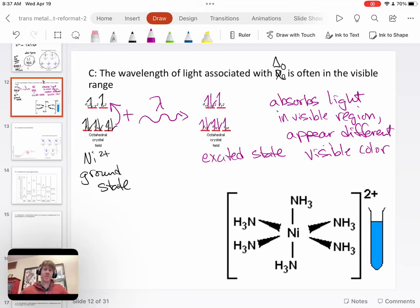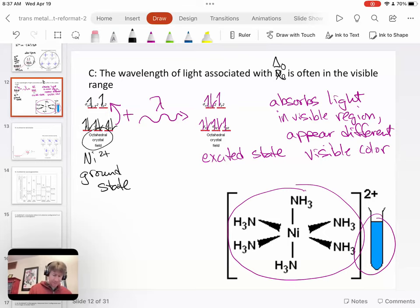And so that's another part of this we've been talking about in Gen Chem 1 and Gen Chem 2. And so here we have nickel with six ammonias in the octahedral geometry, and that will appear a blue color, and that is because it absorbs a different wavelength. And remember, this is for octahedral crystal field.